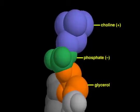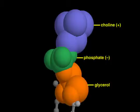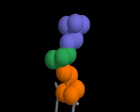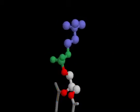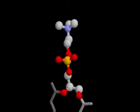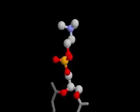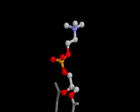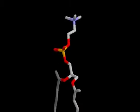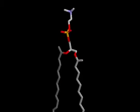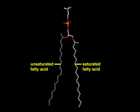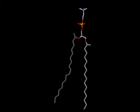The head groups and the phosphate are polar — that is, they prefer to be in an aqueous environment. In contrast, the fatty acid tails are hydrophobic; that is, they are repelled from water.